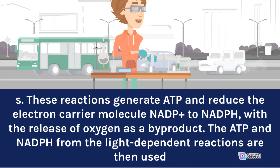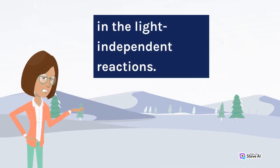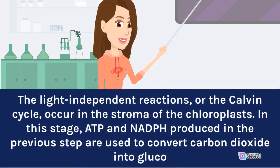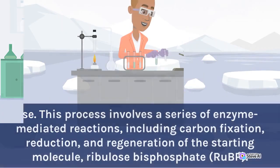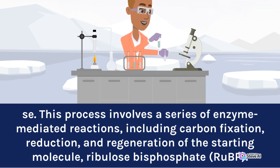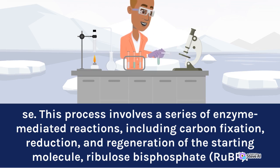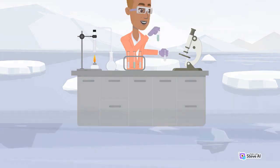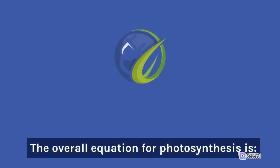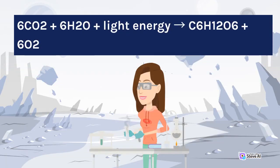The ATP and NADPH from the light-dependent reactions are then used in the light-independent reactions, or the Calvin cycle, which occur in the stroma of the chloroplasts. In this stage, ATP and NADPH produced in the previous step are used to convert carbon dioxide into glucose. This process involves a series of enzyme-mediated reactions, including carbon fixation, reduction, and regeneration of the starting molecule, ribulose bisphosphate (RuBP). The overall equation for photosynthesis is: 6CO2 + 6H2O + light energy → C6H12O6 + 6O2.